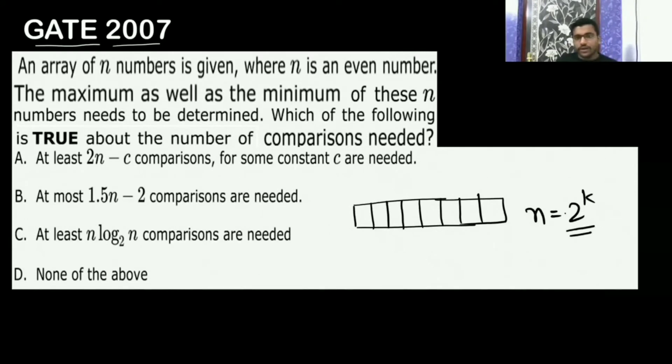So if n is even, how many comparisons are you going to need at max? At most 3/2 n - that we have seen, 3/2 n - so that is going to be 1.5n minus 2 when n is even. You require that many number of comparisons.